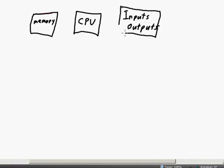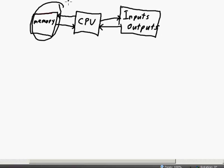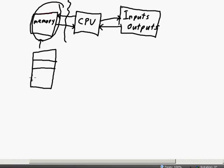We have to have this flow of information from the inputs and outputs to the CPU, in the form of bits. And we also have to have this flow of bits between the CPU and the memory. If we were to zoom in just on the memory and disconnect it from the rest of the CPU and look at a little block in the memory, each one of these little boxes is an address in memory, and in each one of these memory locations, let's say there's eight bits.